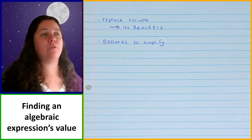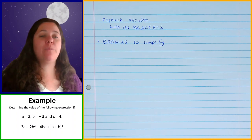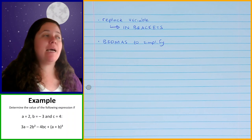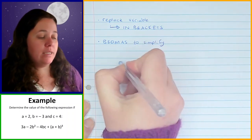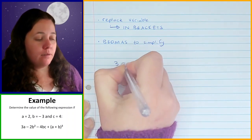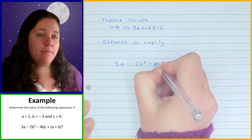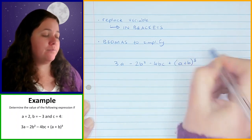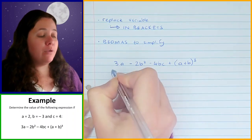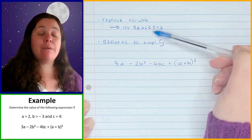Let's have a look at an example. We are told to determine the value of the expression if a is 2, b is negative 3, and c is 4. The expression is 3a minus 2b squared minus 4bc plus, in brackets, a plus b, cubed. The first thing we're going to do is replace our variables with the values we've been given by putting them in brackets.